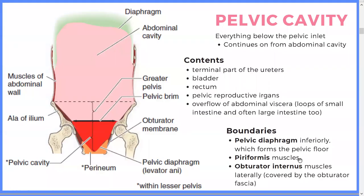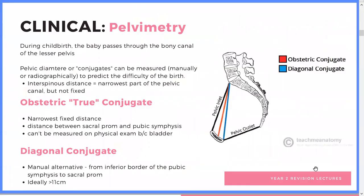Piriformis and obturator internus are some of the muscles that create those boundaries. As I mentioned before, there is a clinical application to knowing all this about the pelvis, and that is basically understanding the obstetric conjugate and the diagonal conjugate, which helps with assessing the difficulty of birth.